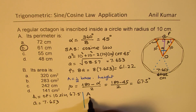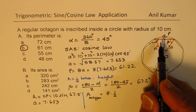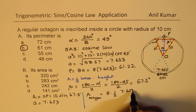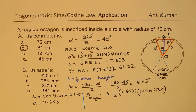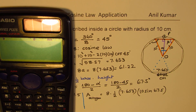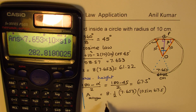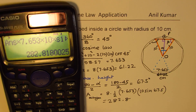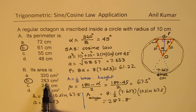The area of the octagon = 8 × (½ × base × height) = 8 × ½ × 7.653 × 10 × sin(67.5°). Calculating: (8 / 2) × 7.653 × 10 × sin(67.5°) ≈ 282.8 cm². That is closest to option B, which is 283 centimeters squared.